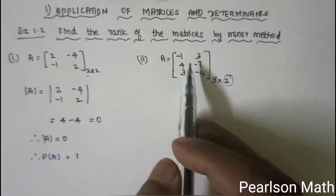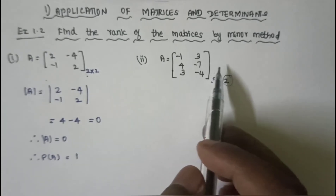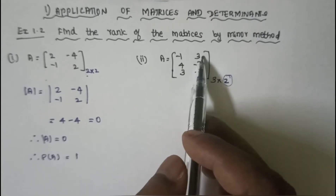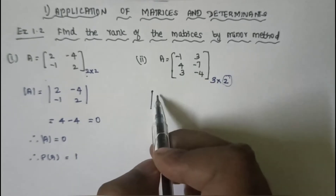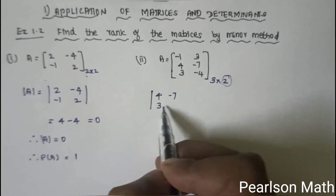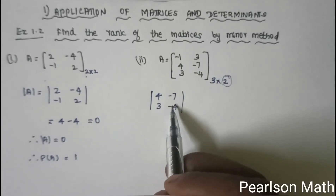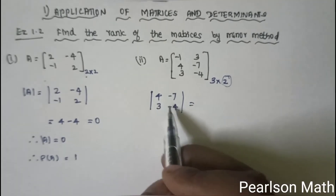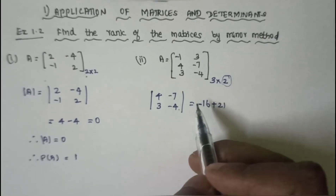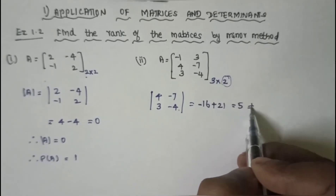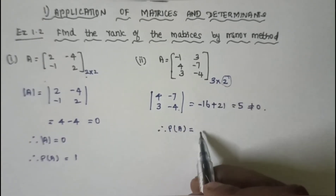For this 3×2 matrix, we check a 2×2 minor: the determinant of [4, -7; 3, -4] equals −16 + 21 = 5, which is not equal to 0. Therefore rank of A equals 2.